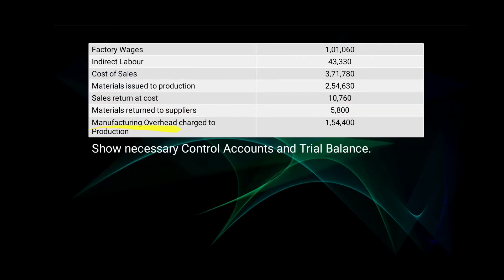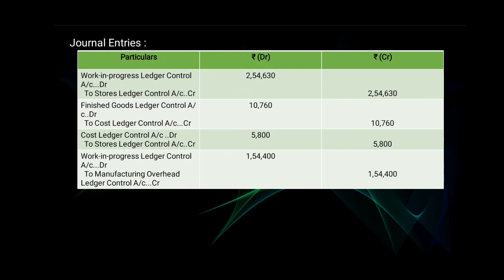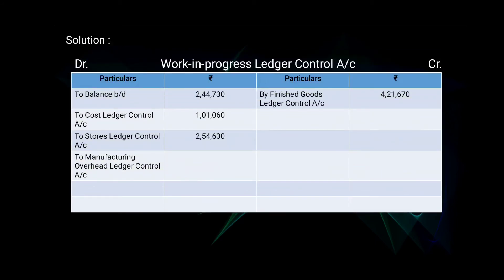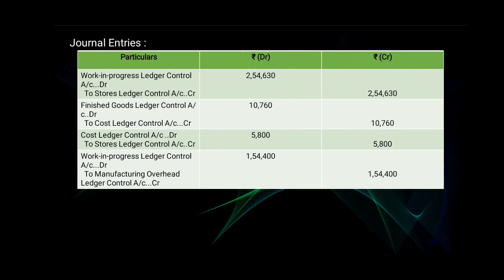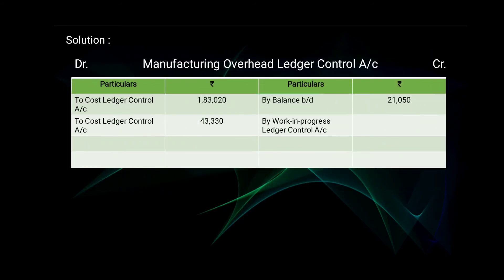Last, manufacturing overhead charged to production — 1,54,400. The journal entry was Work in Progress Ledger Control Account debit, to Manufacturing Overhead Ledger Control Account — 1,54,400. The first effect is in Work in Progress Ledger Control Account — 1,54,400, and the second effect is in Manufacturing Overhead Ledger Control Account as 'by Work in Progress Ledger Control Account — 1,54,400.'